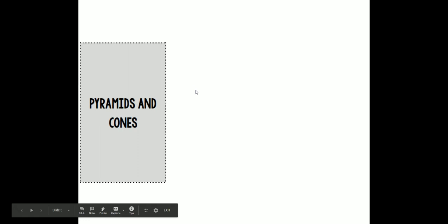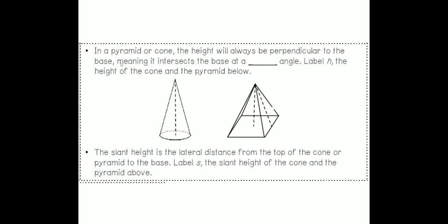If you're following with printed notes in handout five we're going to go to this page. It says that in a pyramid or a cone the height will always be perpendicular to the base, meaning that it intersects the base at a 90 degree angle. Label H the height of the cone and the pyramid below. So H is going to be the height of the cone. It's going to be this dotted line right here. For the pyramid it's this dotted line right here. We're going to label that H.